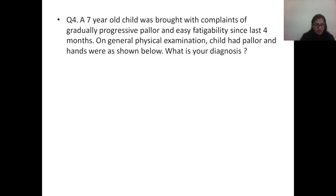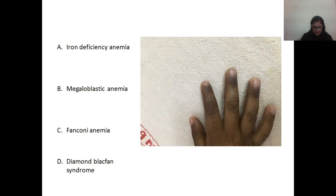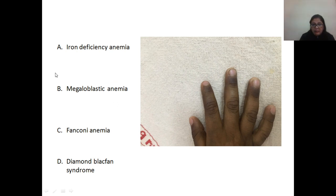Question number 4: a 7-year-old child was brought with complaints of gradually progressive pallor and easy fatigability since the last 4 months. On general physical examination the child had pallor and the hands showed knuckle hyperpigmentation. This is characteristically seen in megaloblastic anemia.